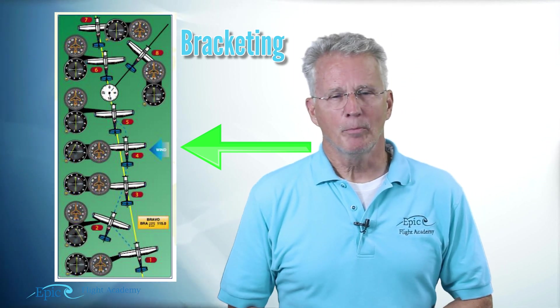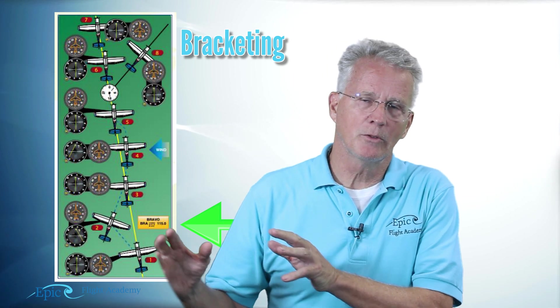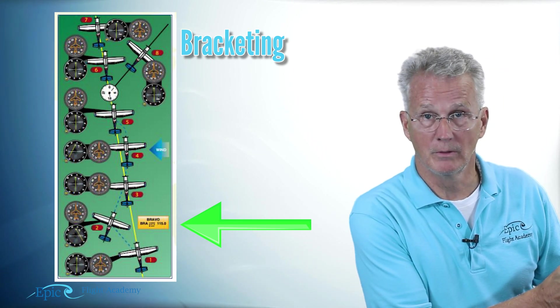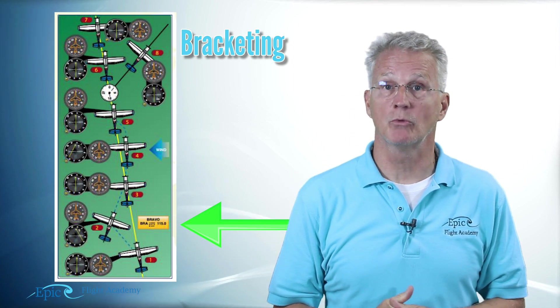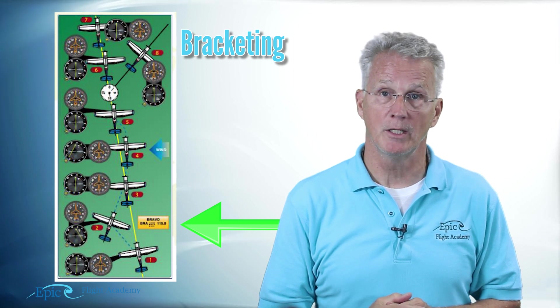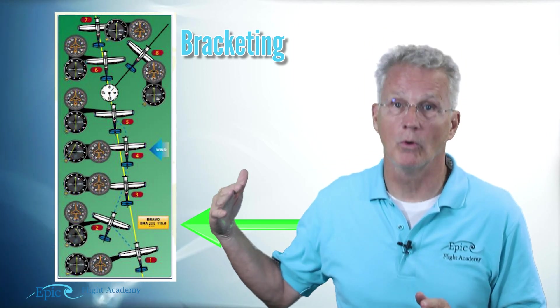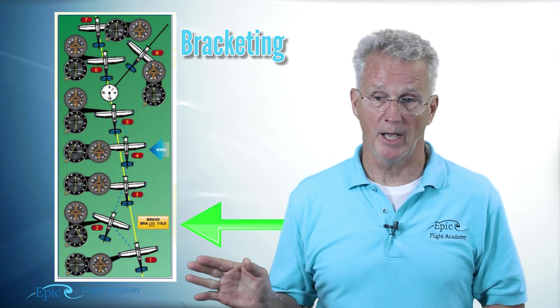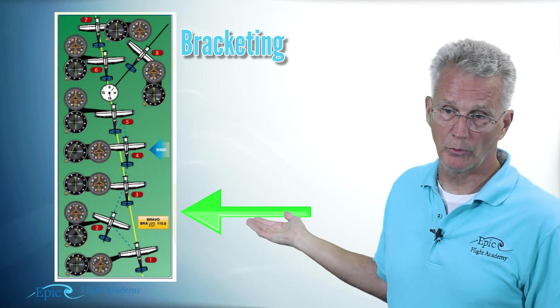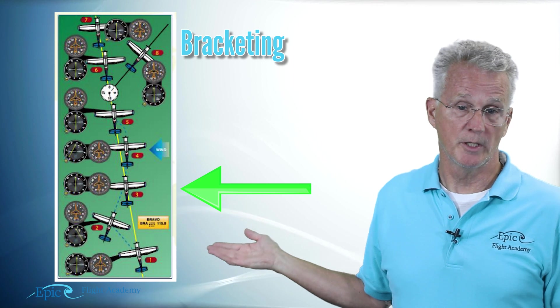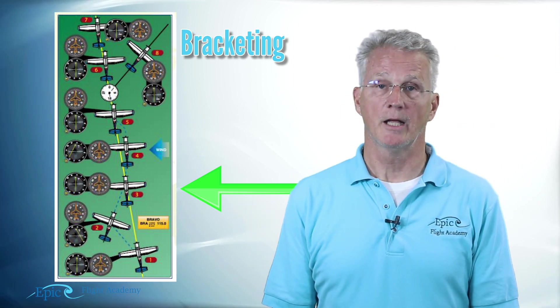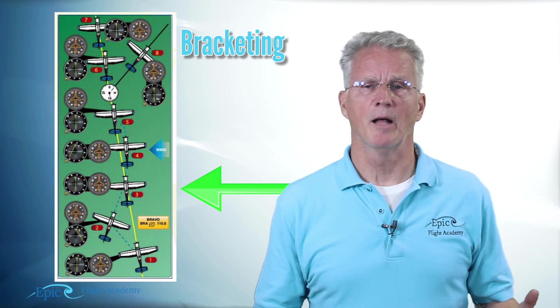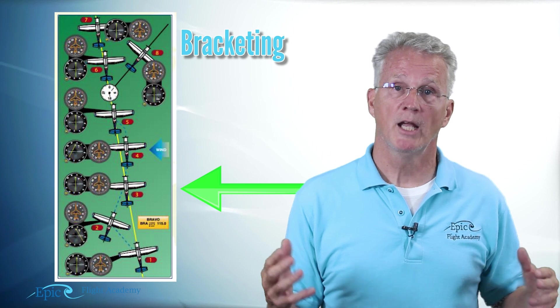In airplane number two, that easterly wind has blown me west of my course. My OBS still says 360 TO, but the needle is showing me that my course is to the east or to my right. So now I've changed my heading to 020 degrees to fly back on course. Airplane number three shows me back on course 360 with the OBS still set to 360. As is not uncommon, the wind shifts and changes, and these winds let up a little bit.